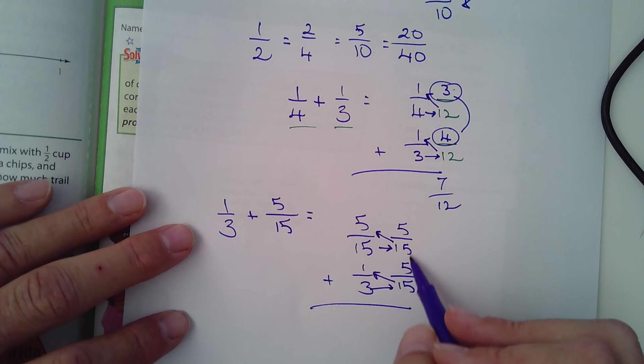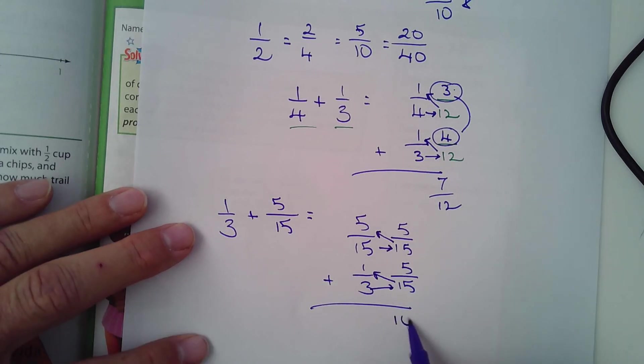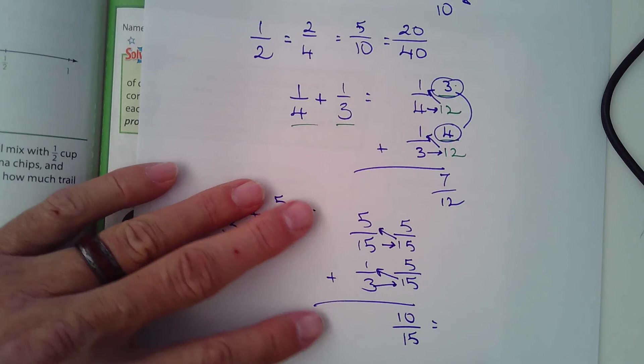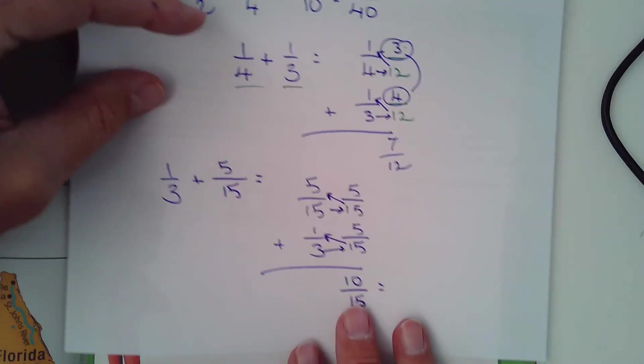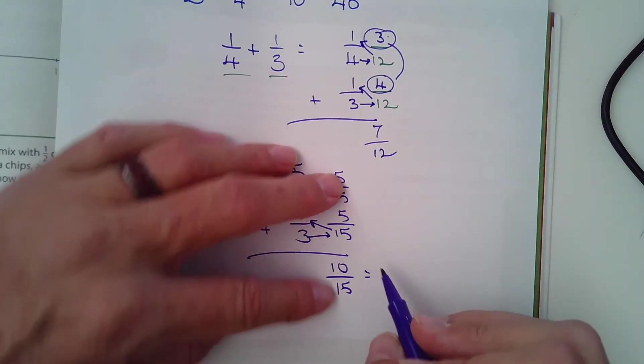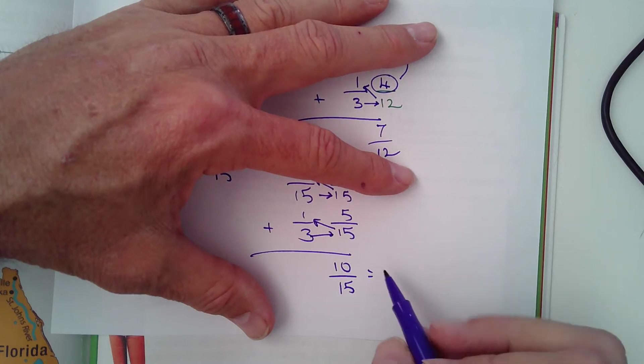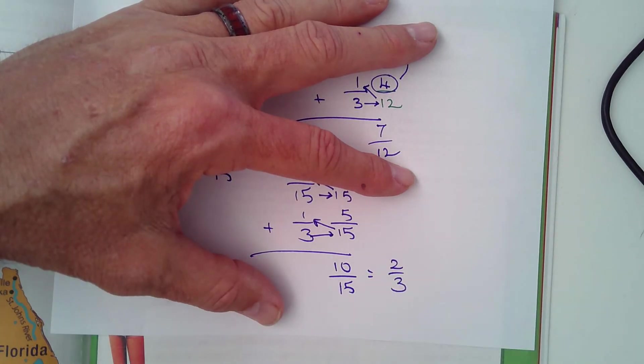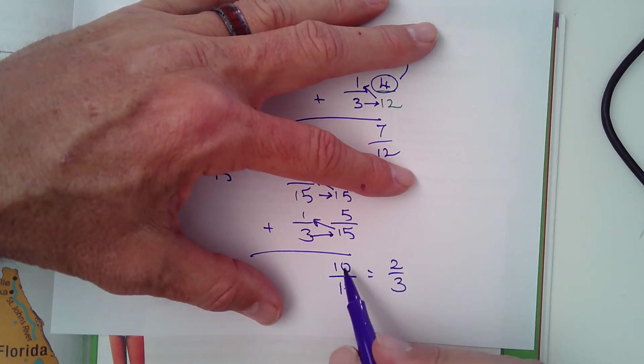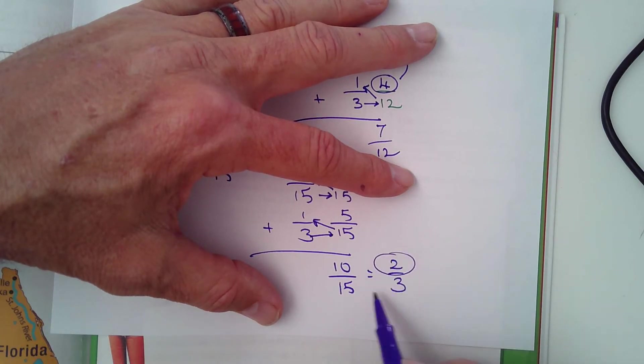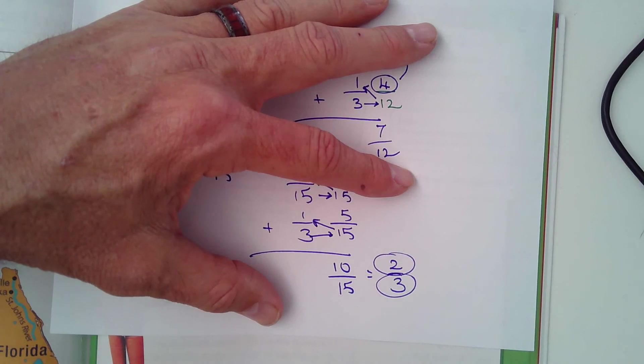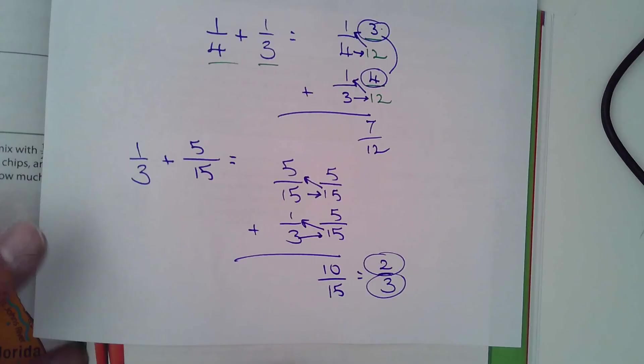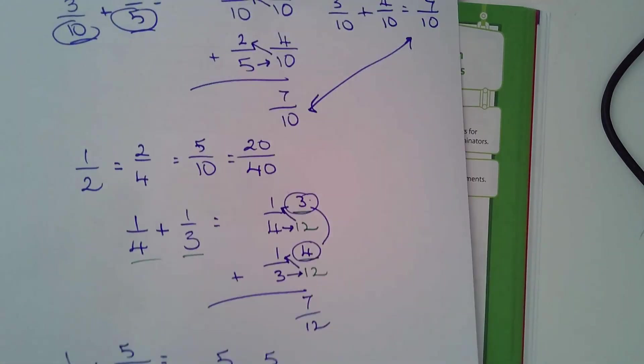Which can be reduced. Did you guys learn anything about reducing in fourth grade? I don't know. I wasn't there. So this actually reduces to 2/3. What I did is I looked for a number that would fit into both of them, and five goes into ten twice. Five goes into fifteen three times. So it's 2/3. So finding a common denominator.